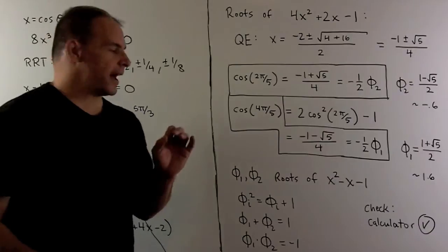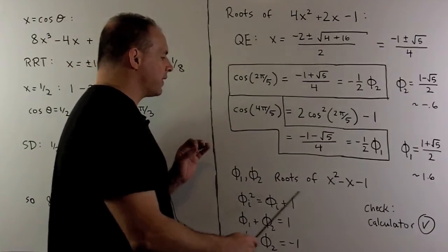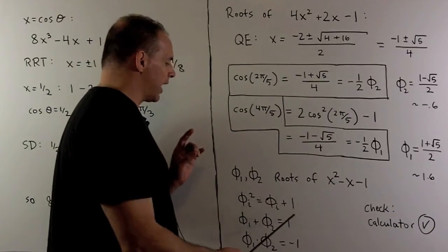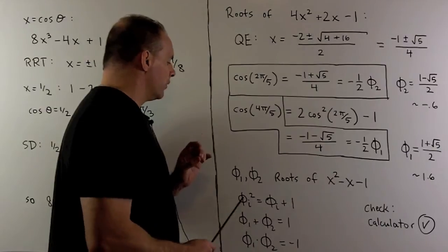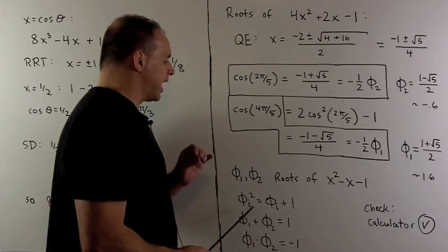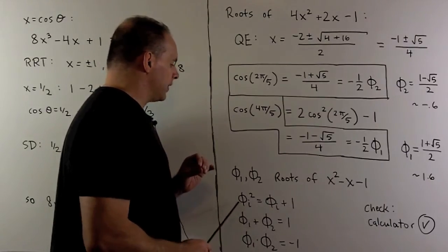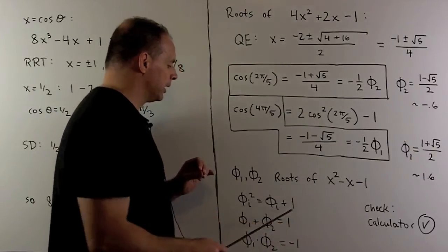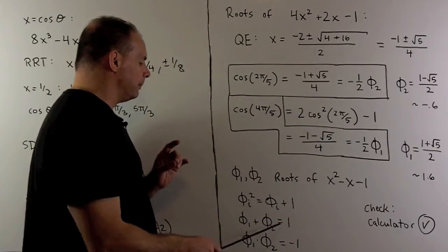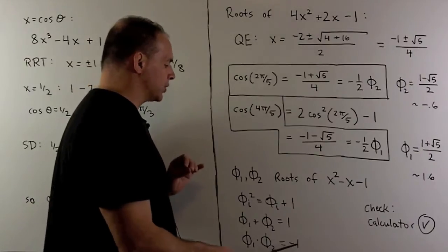Now, for φ₁ and φ₂, we're going to satisfy the following relations, which are useful to have around. So if we square either one, it's the same as just adding one. That's because we're a root of our polynomial here. If we add them, we get 1. And if we multiply, we get -1.